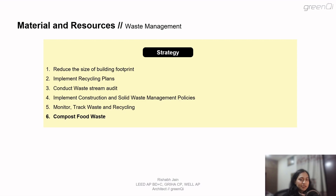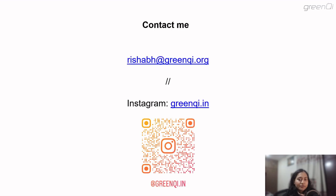These are the waste management strategies we discussed: reduce the size of the building footprint, implement recycling plans, conduct waste stream audits, implement a construction and solid waste management policy, monitor and track waste and recycling, and compost food waste. That's pretty much the materials and resources category. Please hit the subscribe button. If you have any doubts, feel free to contact us. Check out our practice question bank — the link is provided in the description — and see you in the next video for the IAQ category. Thank you.